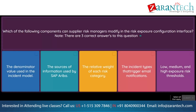Question. Which of the following components can supplier risk managers modify in the risk exposure configuration interface? Note, there are three correct answers. Option 1: The denominator value used in the incident model. Option 2: The sources of information used by SAP Ariba. Option 3: The relative weight of each risk category. Option 4: The incident types that trigger email notifications. Option 5: Low, medium, and high exposure risk thresholds.